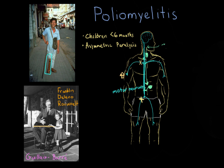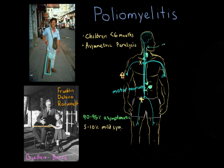Not everybody who contracts polio experiences this degradative damage to their motor neurons. In fact, 90 to 95% of people who are acutely infected are asymptomatic — they have no symptoms. About 5 to 10% of people get only mild symptoms.